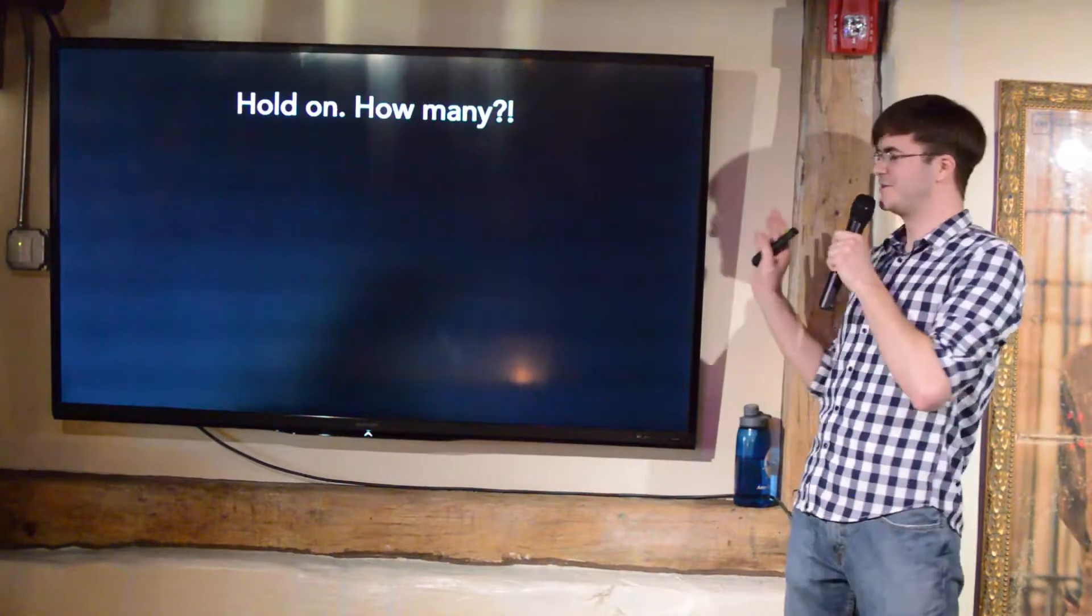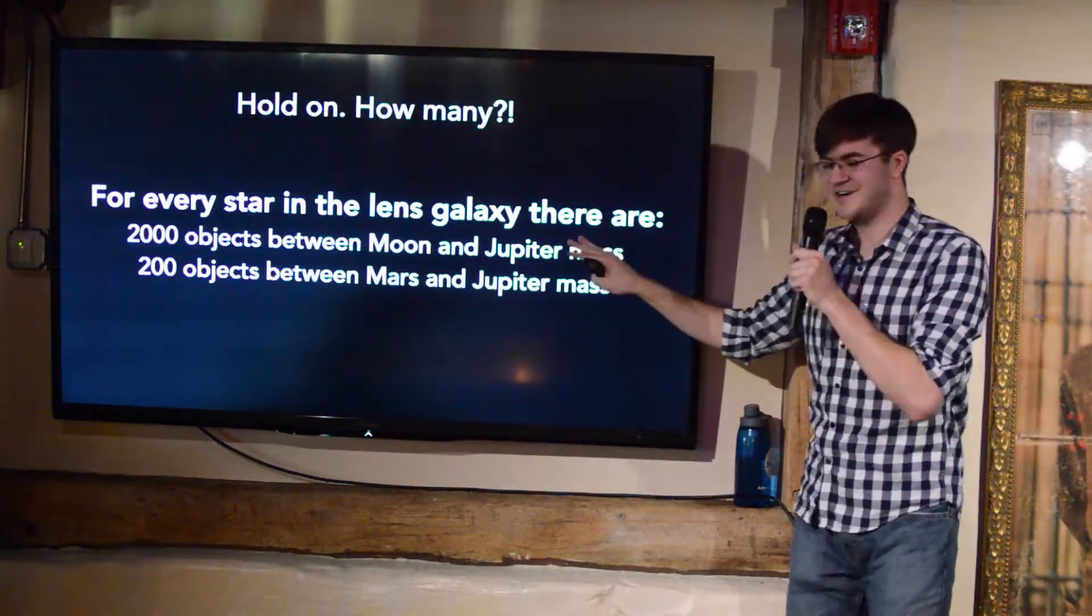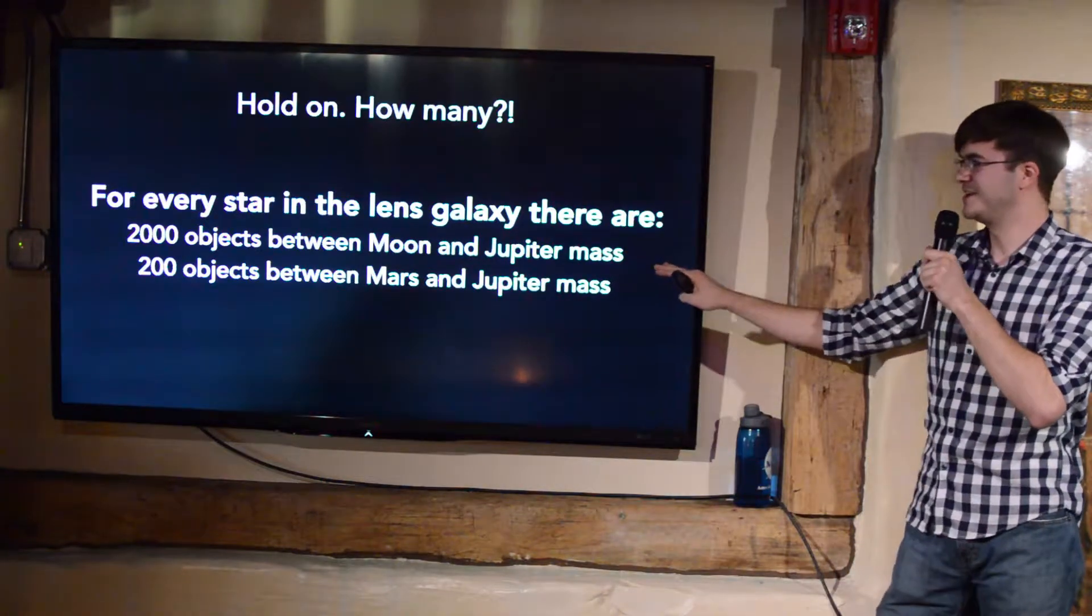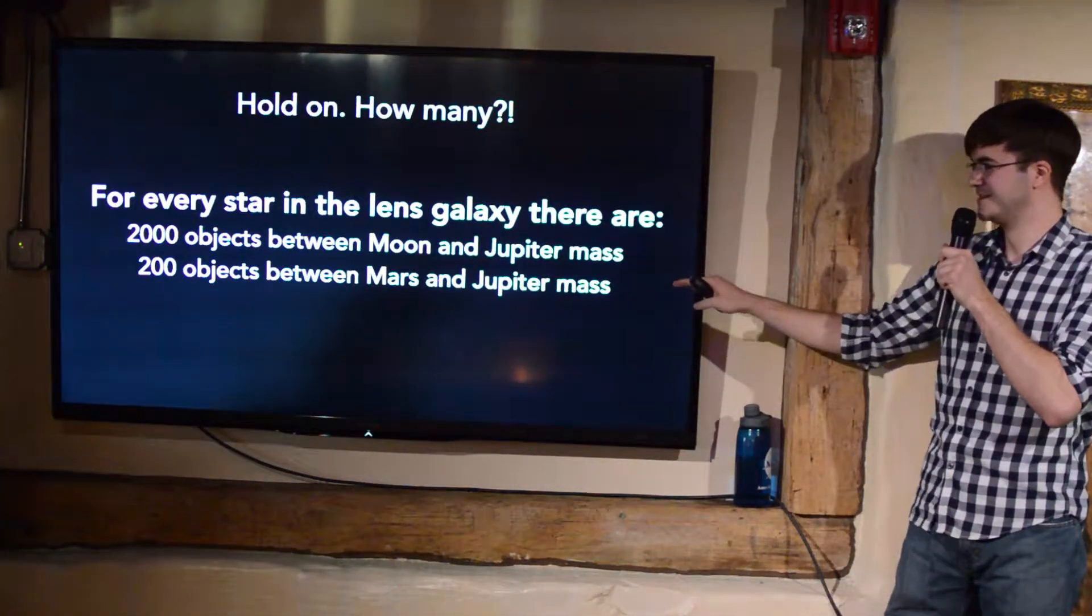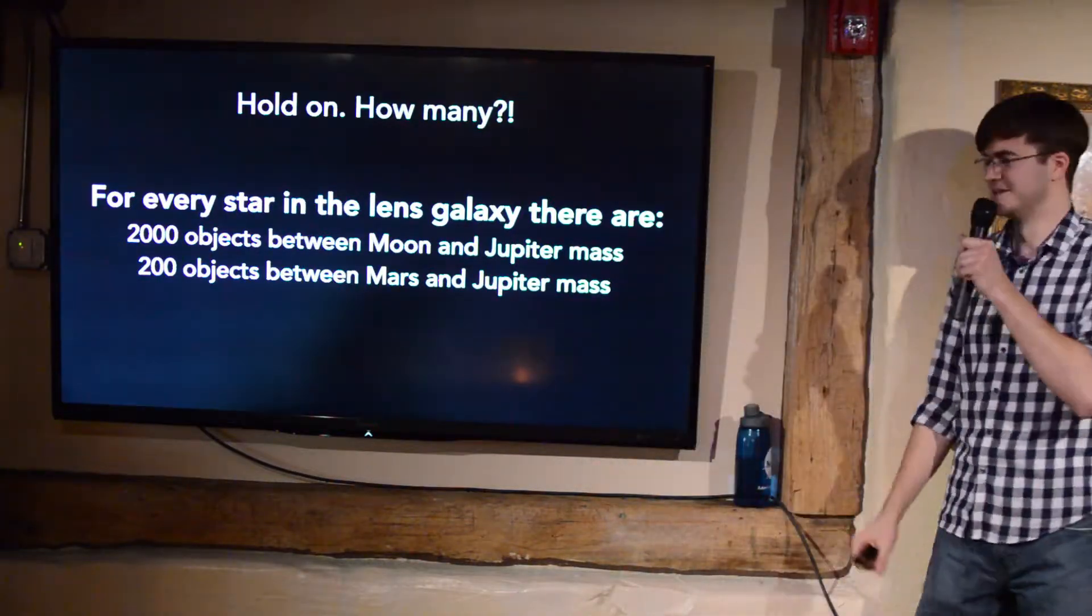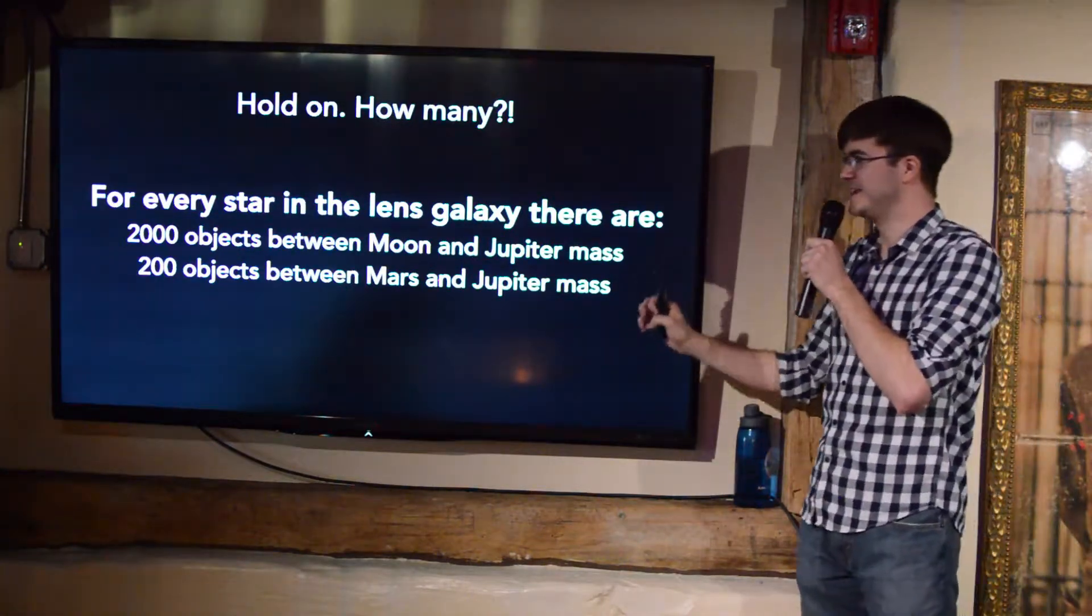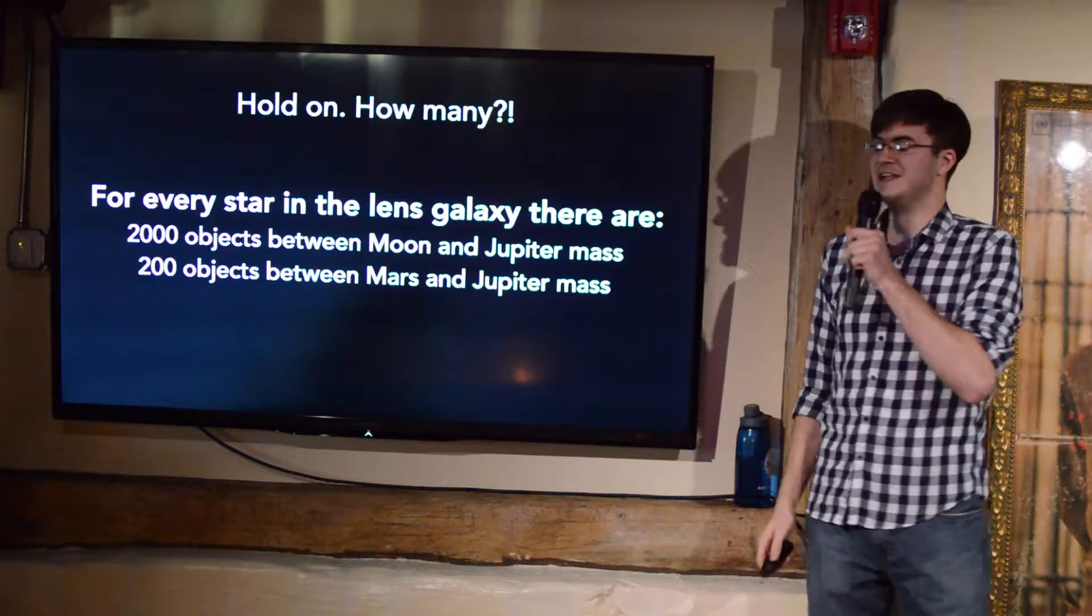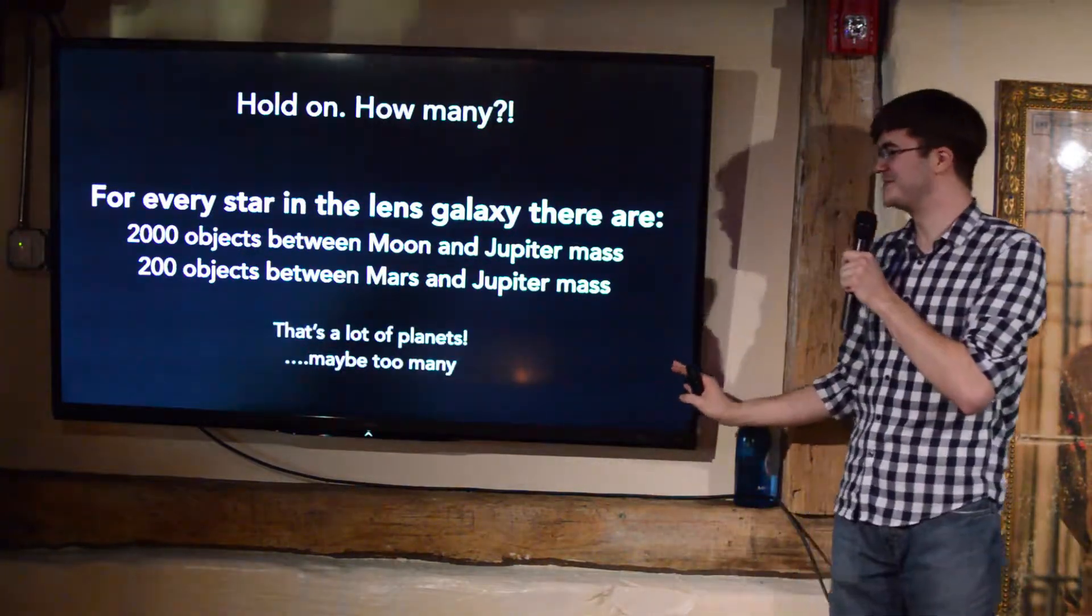And so to explain the 30% of the time they measure an energy shift, they need something like 2,000 planets per star that are free-floating planets in the range from Moon to Jupiter's size. So you may be thinking, wait, hang on, hold on just a second, let me reword that. For every star in the lens galaxy, then, you need 2,000 objects between the Moon and Jupiter mass, and 200 of those have to be between Mars and Jupiter mass. So these free-floating planets outnumber stars in this galaxy 2,000 to 1. It seems like a lot of planets, maybe too many planets.